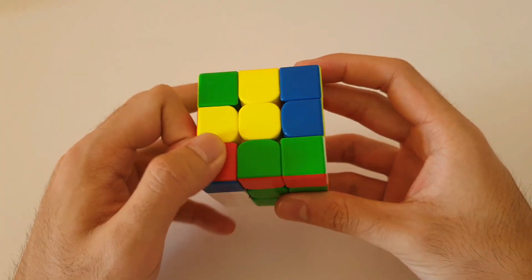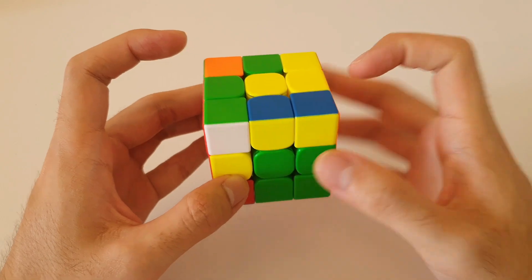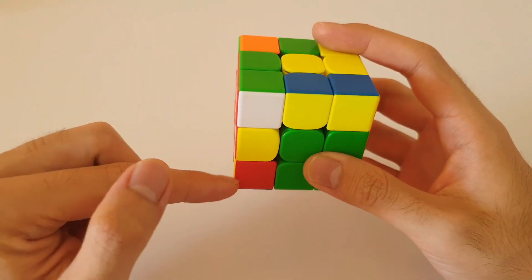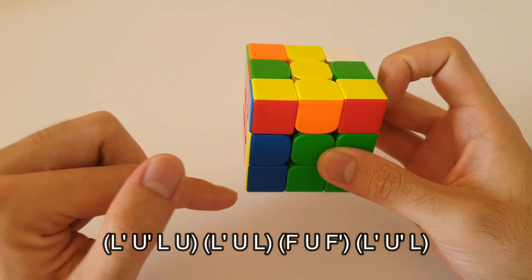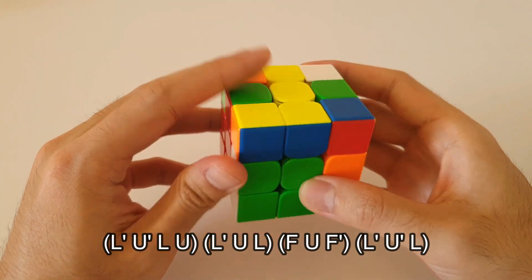So it starts off with the lefty sexy. Following that, remember, you want to insert this corner into this position using R moves, like this. Insert this corner into this position using F moves, like this.